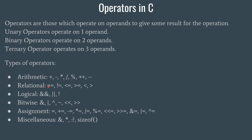Relational or comparison-based operators are used to make a comparison between two or more values — to check whether some value is larger than another or equal to another. Then we have the logical operators. As you may have studied, the basic logic gates are AND, OR, and NOT. Logical operators work similarly: the double ampersand (&&) represents AND, the double pipe (||) represents OR, and the exclamation mark (!) represents negation or NOT.